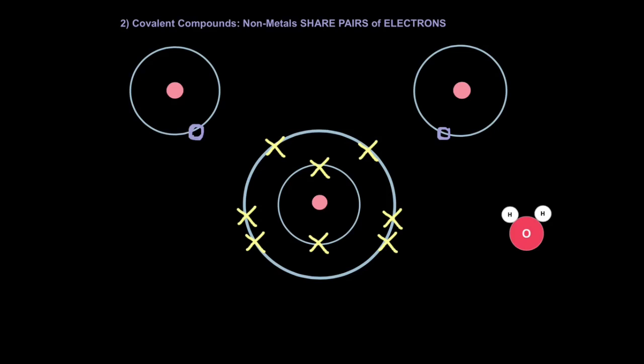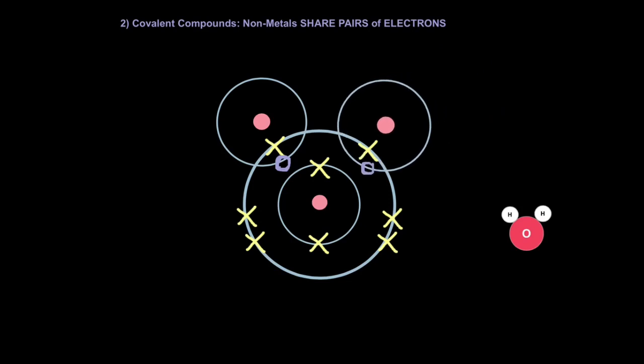To sort this problem out, all you do is make the atoms share electrons. So, now you can see they each share one electron pair, and these electrons count for both of them. So, now hydrogen has one, two electrons, so it's got a complete first shell. And oxygen now has one, two, three, four, five, six, seven, eight. So, it's also got a stable, complete outer shell.